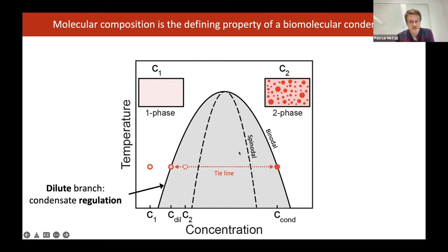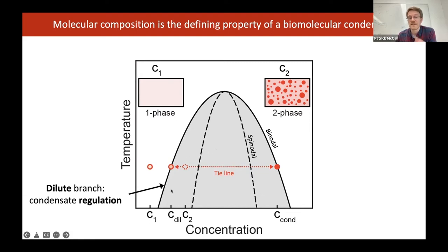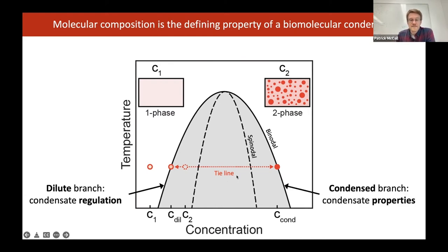The dilute branch tells us about how condensates can be regulated — at the same expression level, if you decrease the temperature, suddenly you demix. The condensed branch tells us about condensate properties — the actual amount of material inside. Any physical property the droplet might have, its viscosity or interfacial tension, is going to depend on the absolute concentration of protein inside. A very dense droplet would be expected to be more viscous than a more dilute droplet made with the same protein.